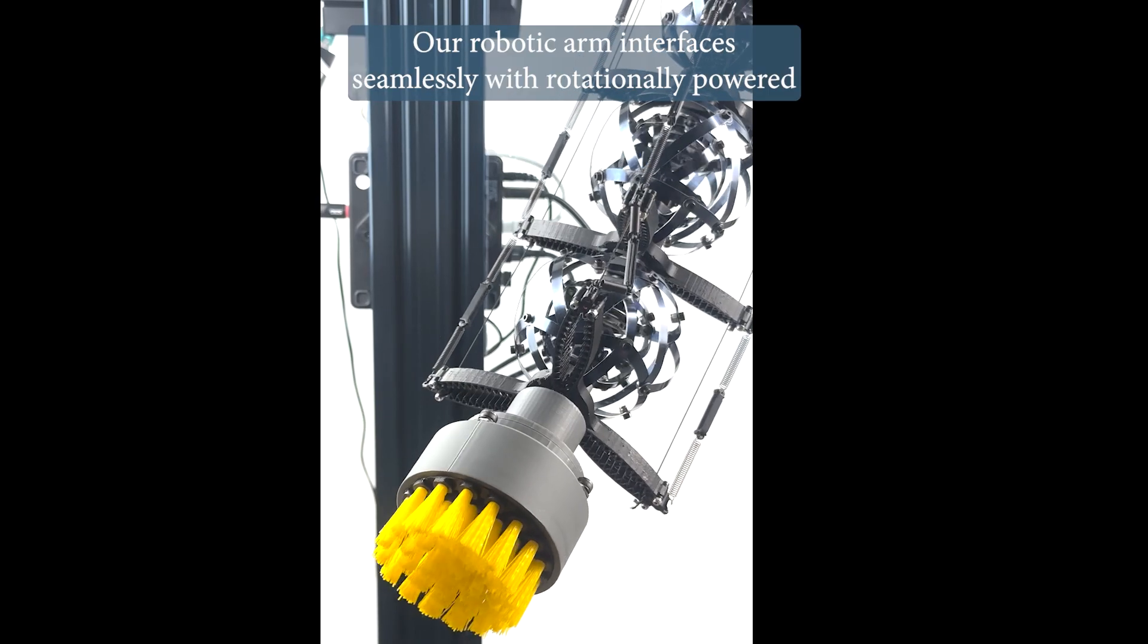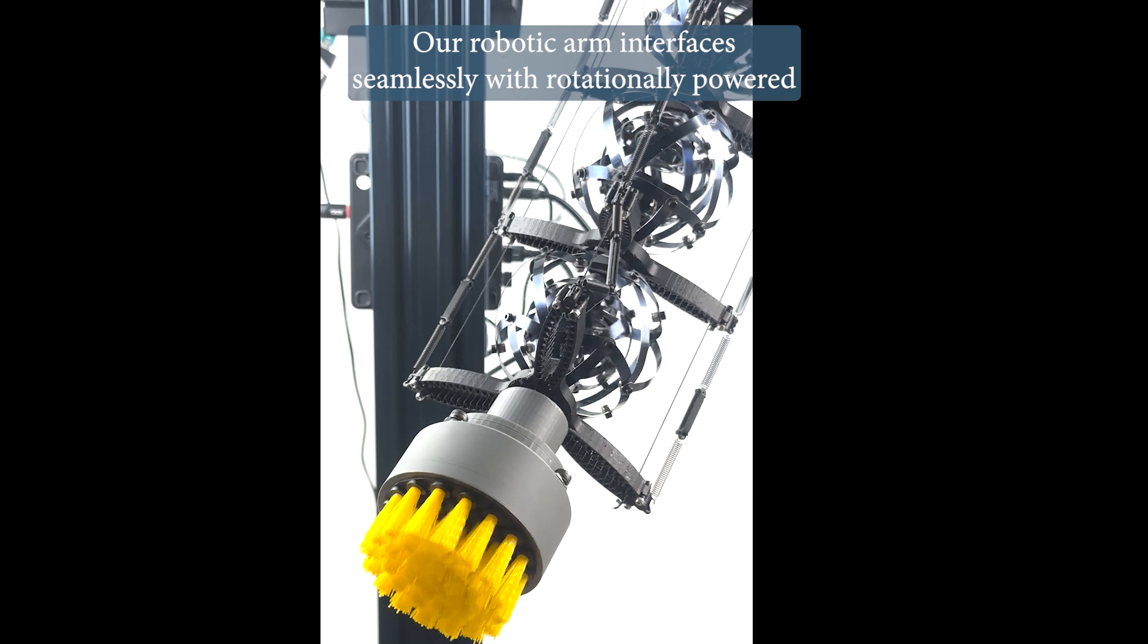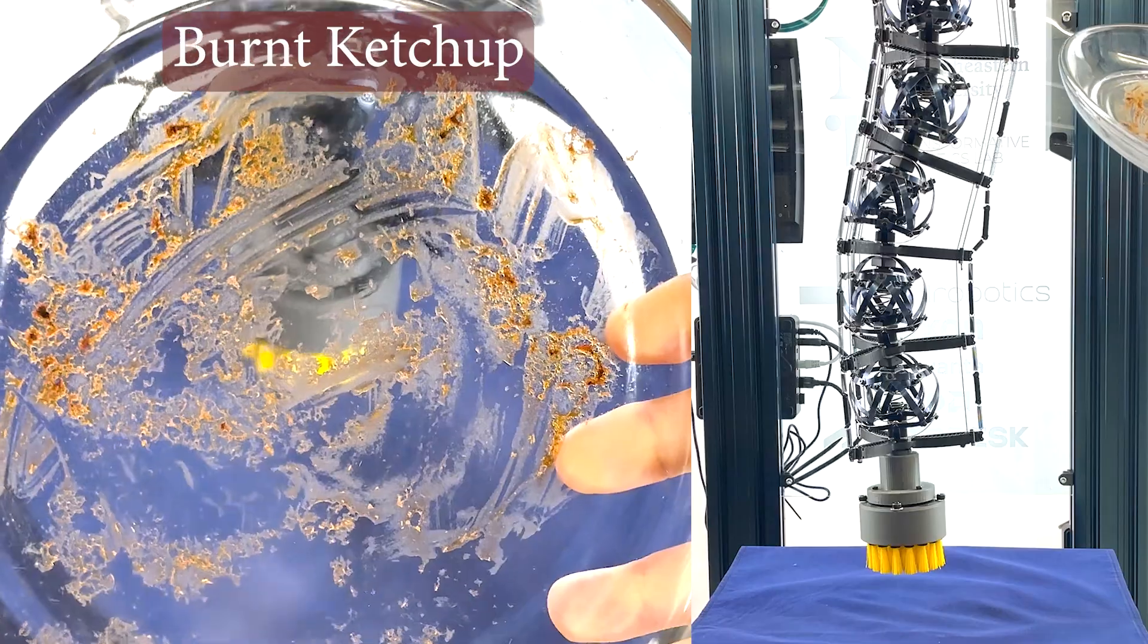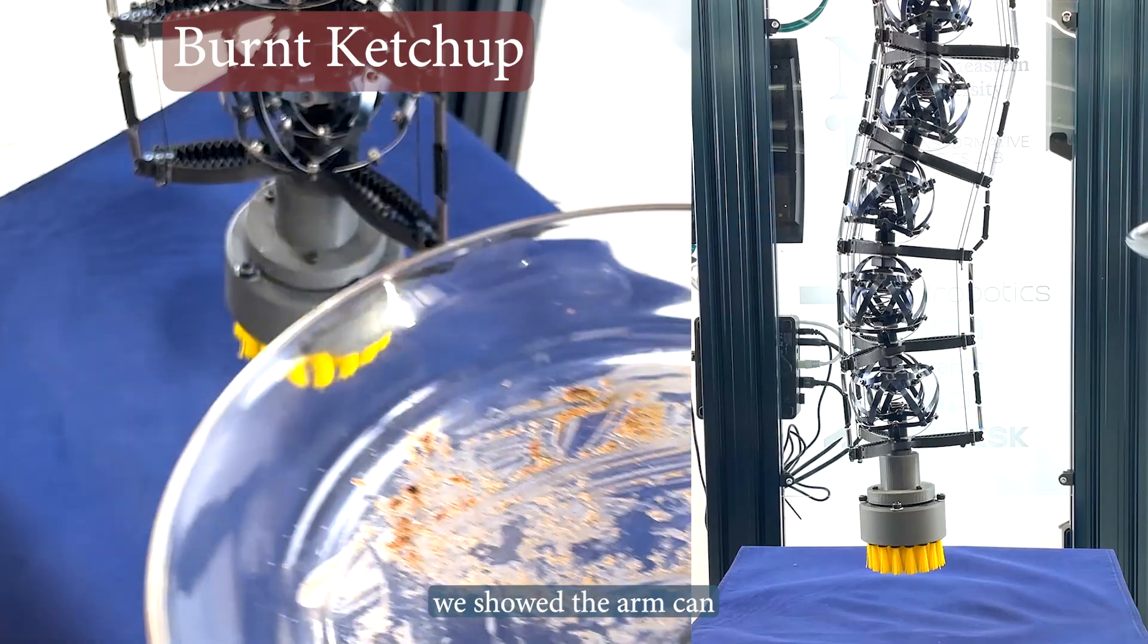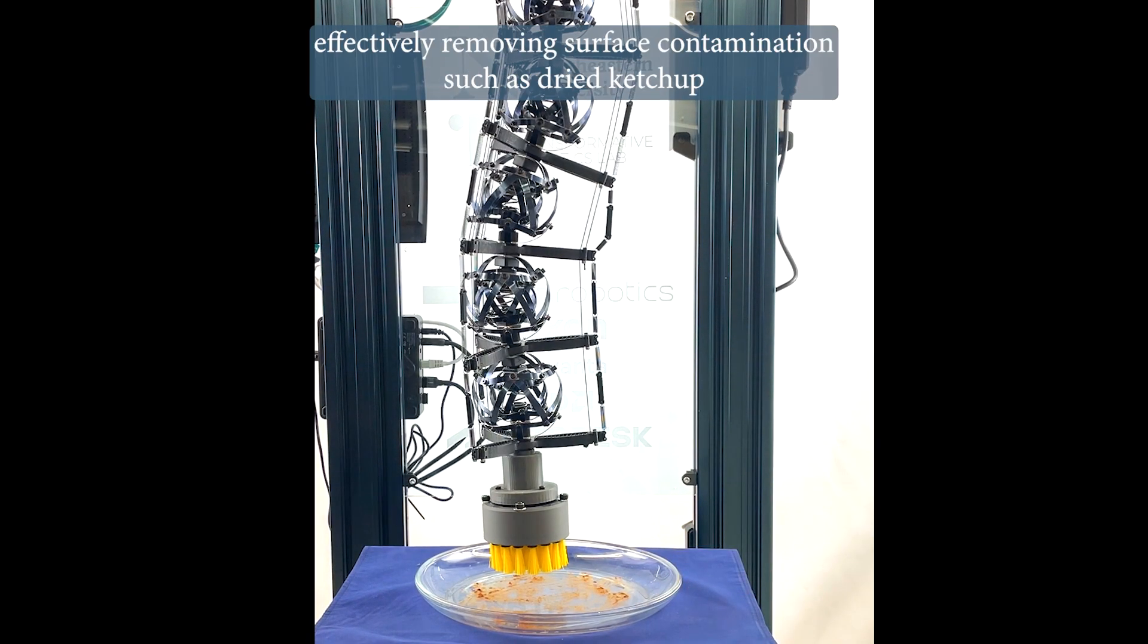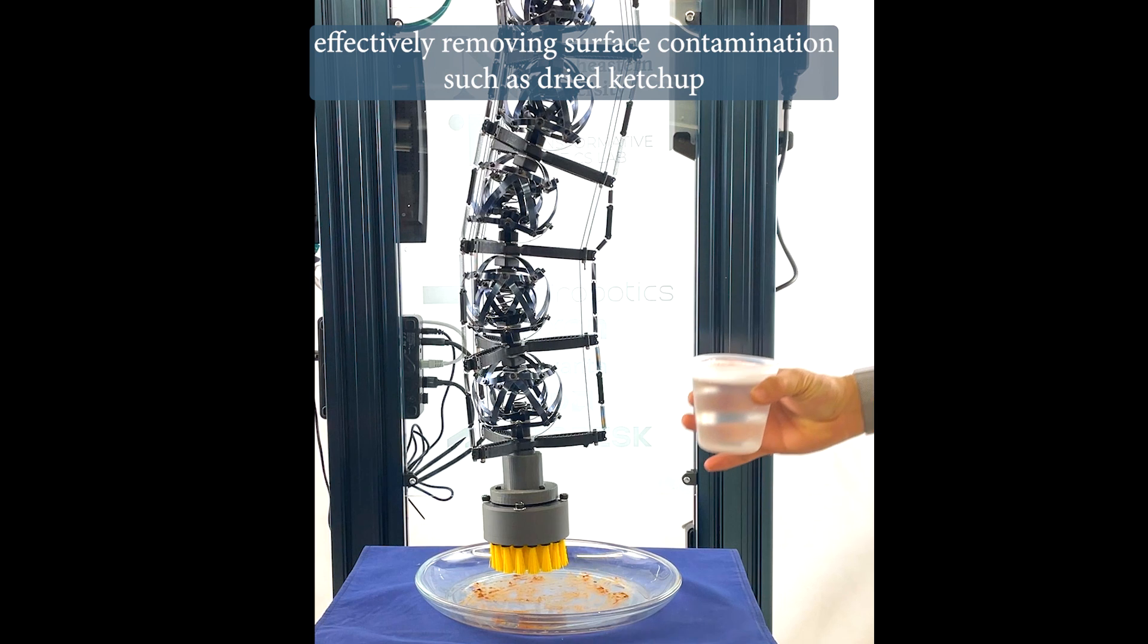Our robotic arm interfaces seamlessly with rotationally powered tools such as a brush. Using this brush, we showed the arm can scrub delicate surfaces without damaging them while effectively removing surface contamination such as dried ketchup on a plate.